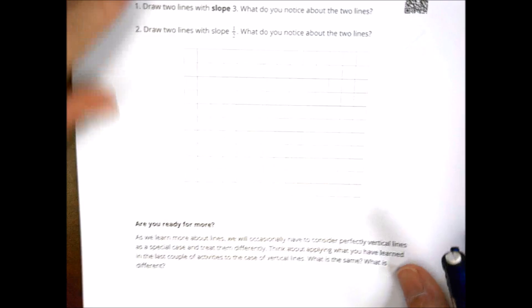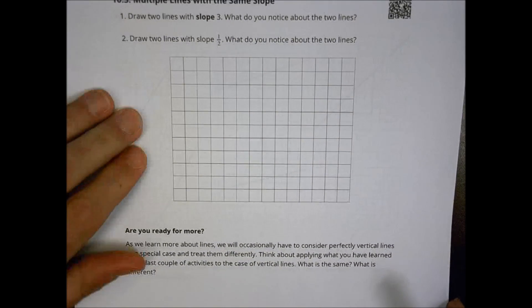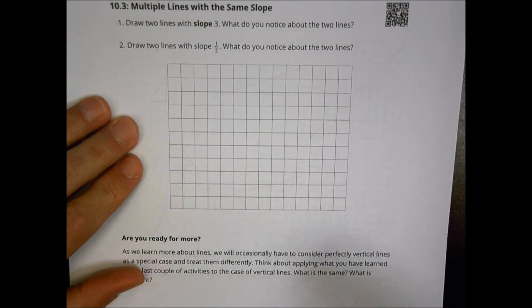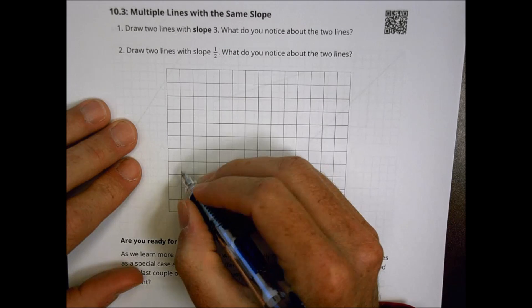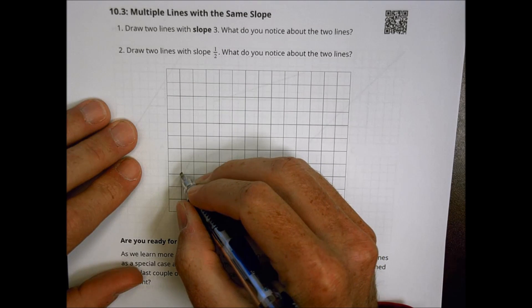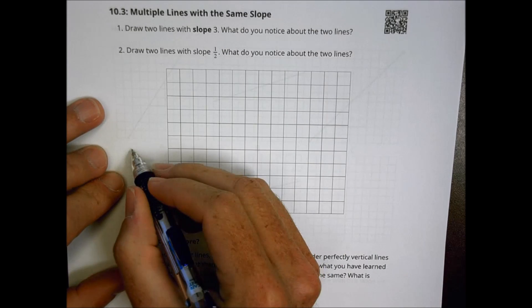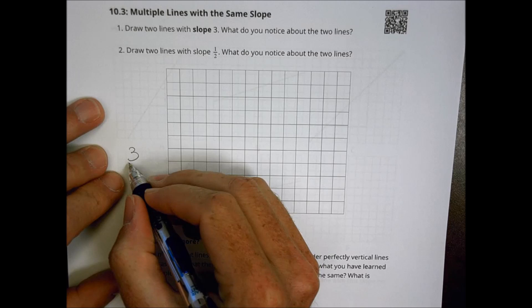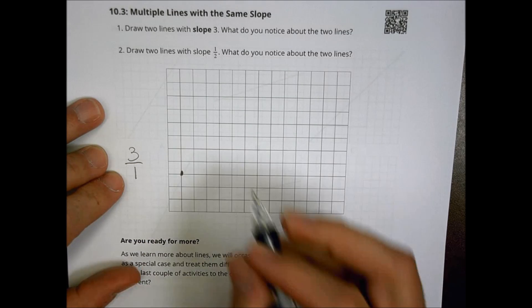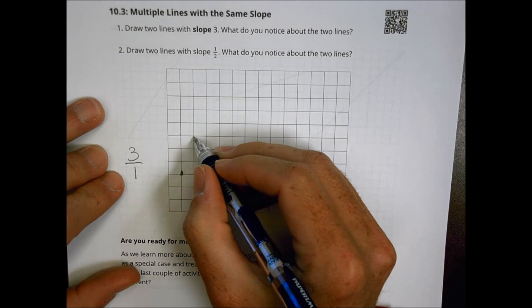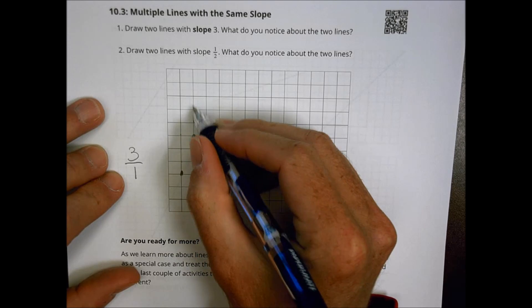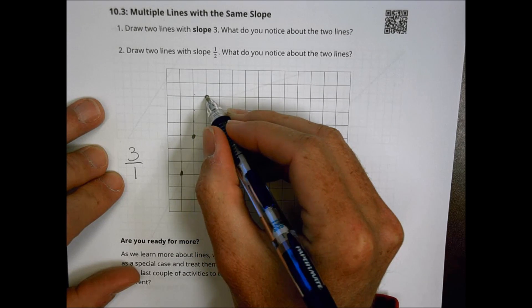So in part three, you're going to draw two lines with a slope of three. To do that, you might plot a point right here. A slope of three means going up three and to the right one — so up one, two, three and over one, then again up one, two, three and over one.